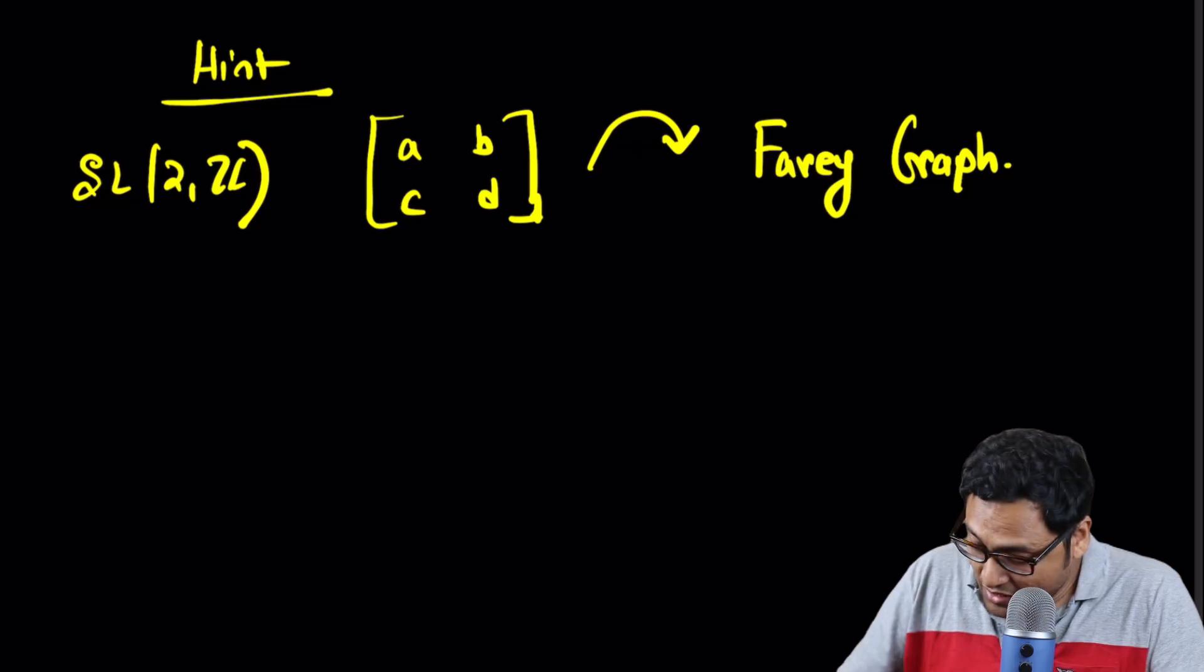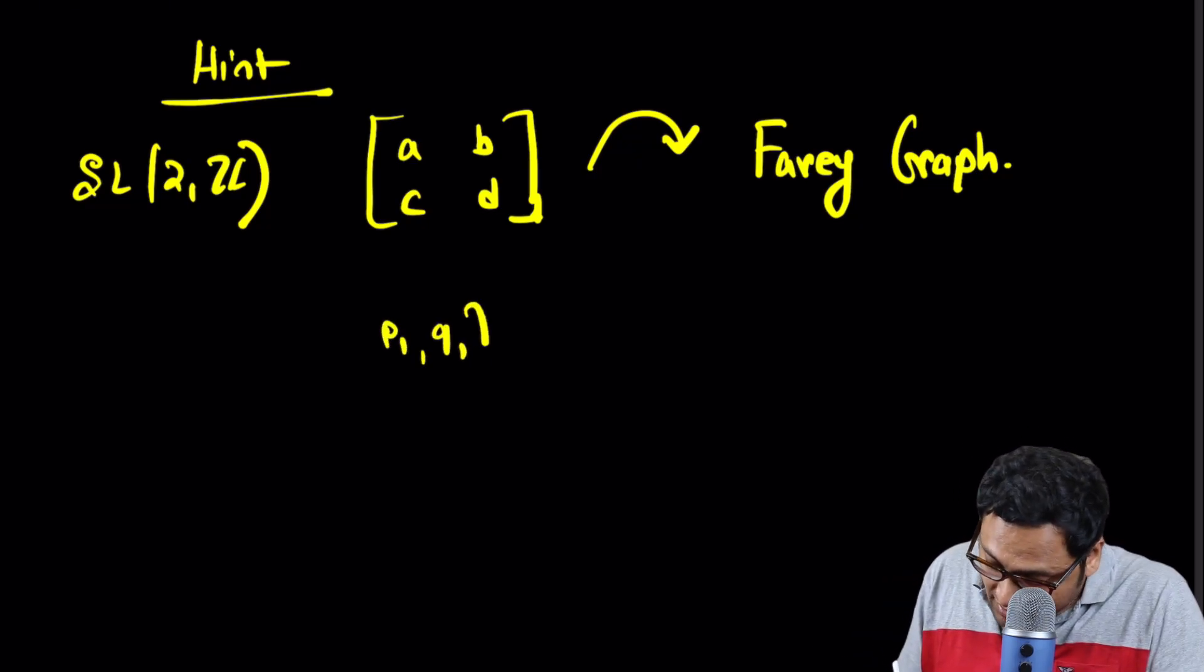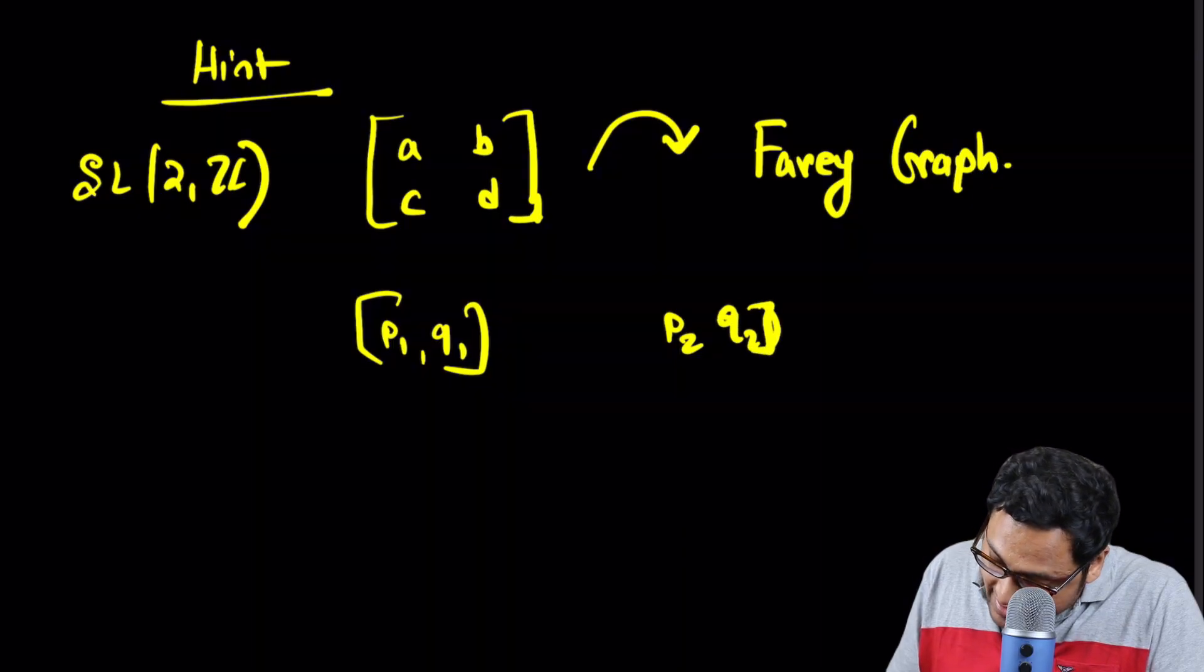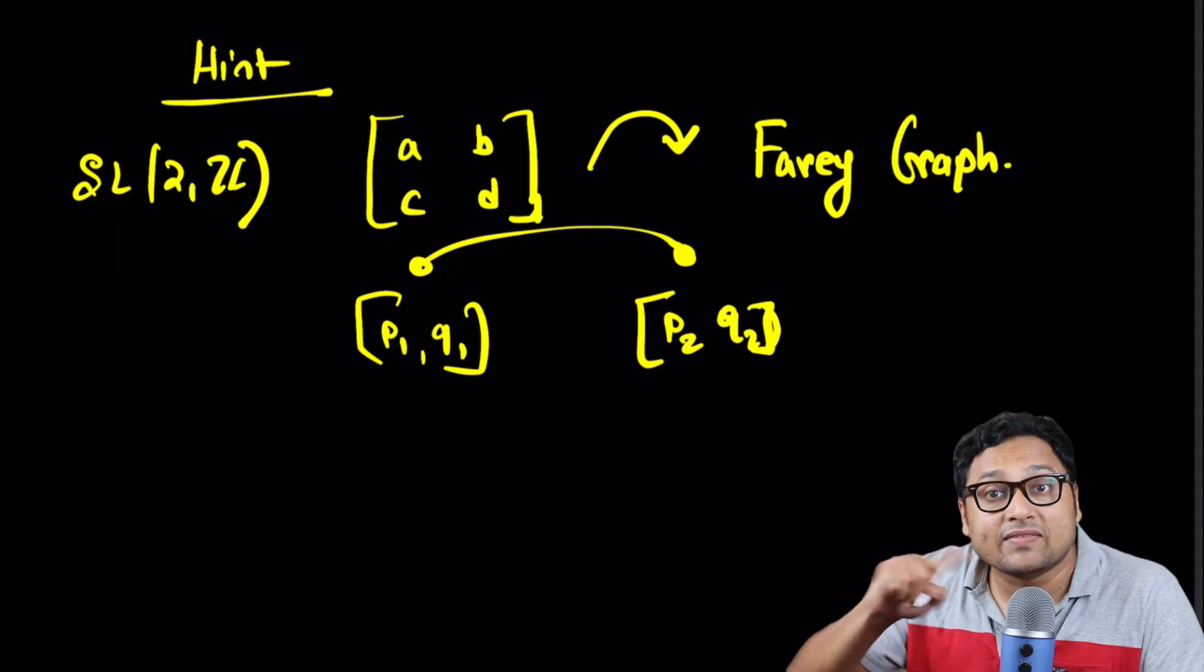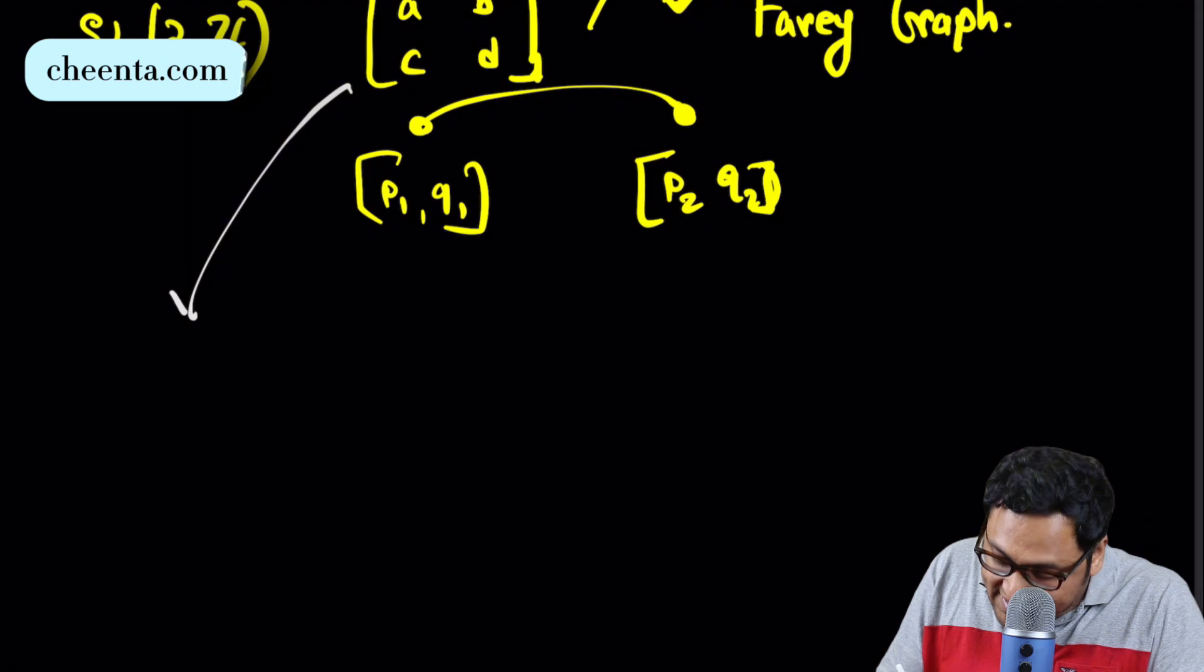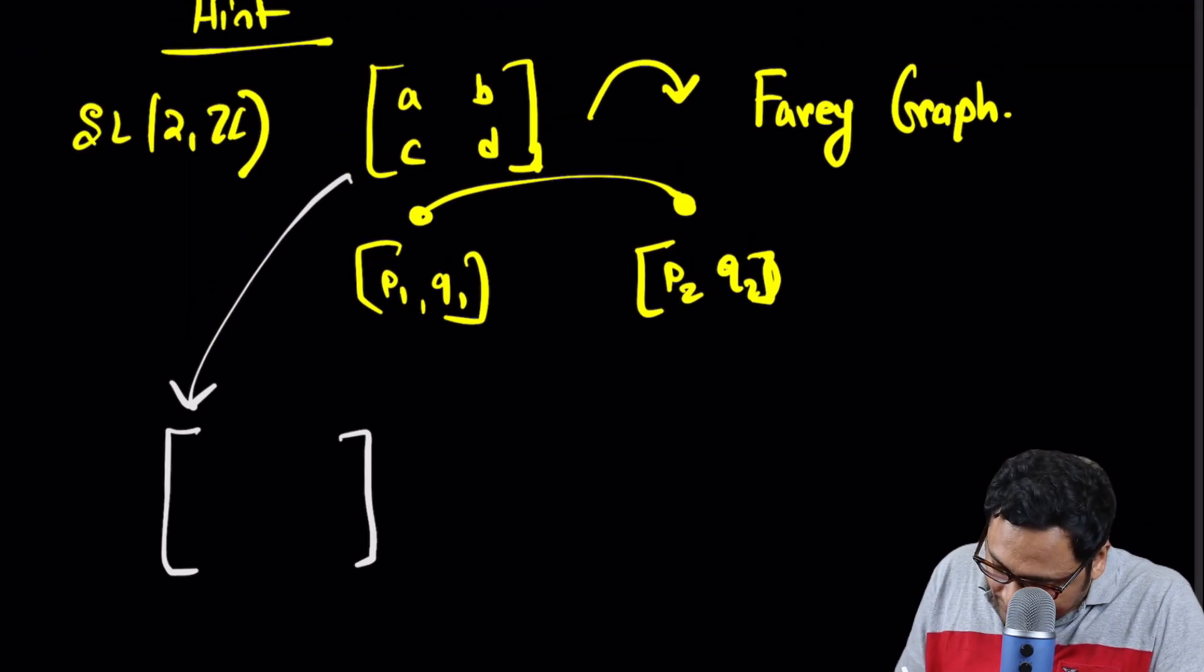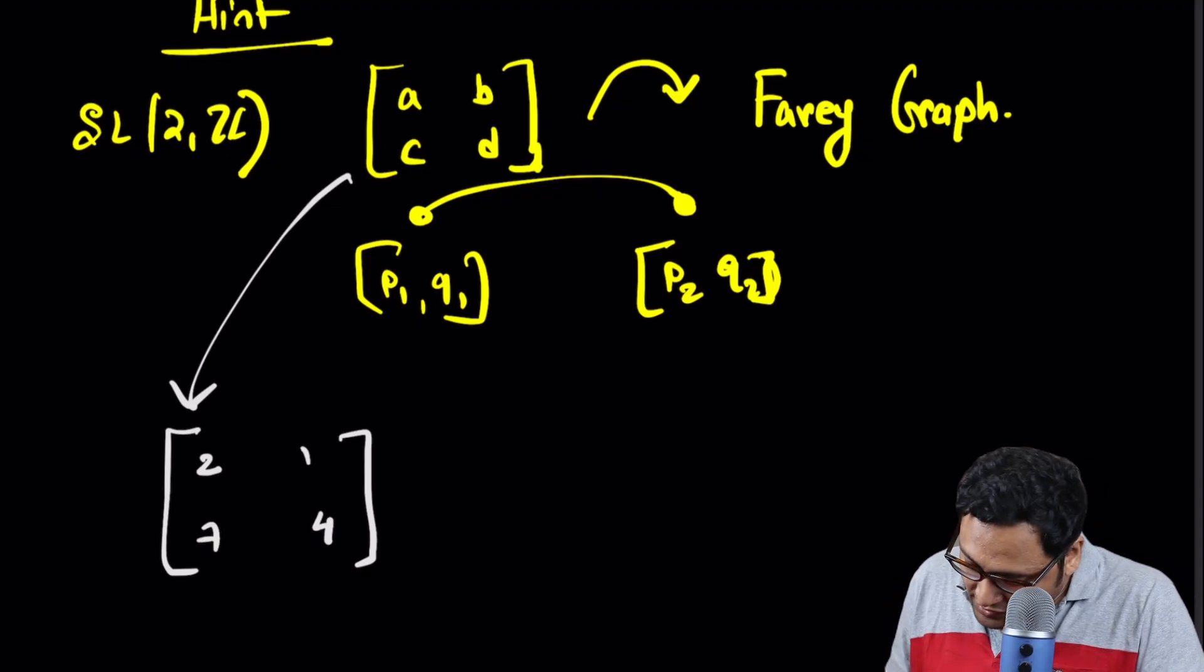Instead, the Mobius transformations, if you look at them, they have a natural action on the Farey graph. Suppose we have two points, P1, Q1 and P2, Q2. And they are adjacent. That is, there is an edge between them connecting these two points. Then, what we can do is that we can take a matrix like this, ABCD. It's easy to construct matrices like this. Let's say, 2, 4, 7, 1. That's an example of a matrix like this. If I apply this on P1, Q1.